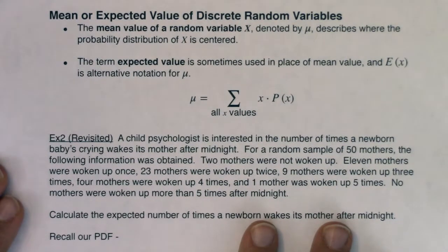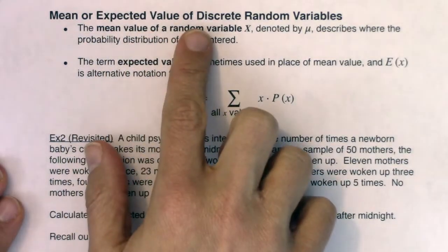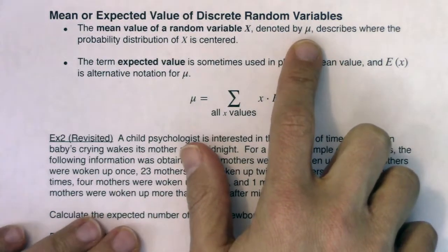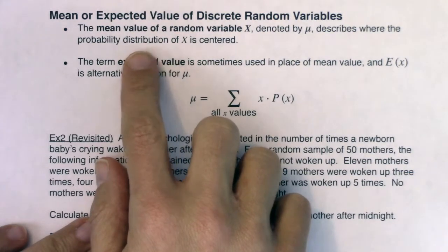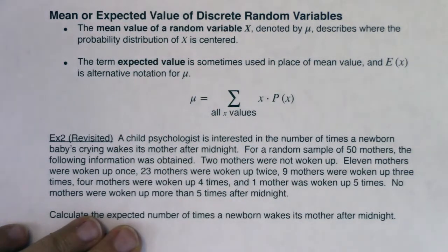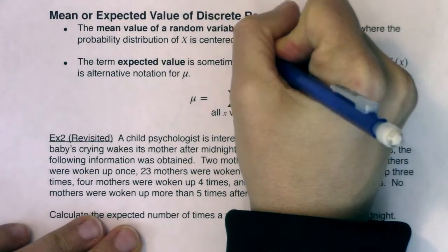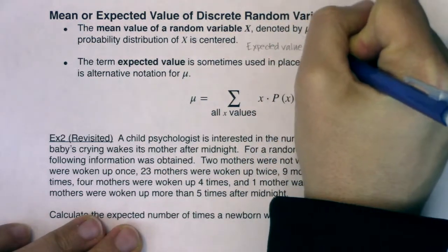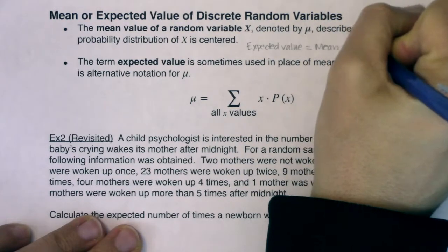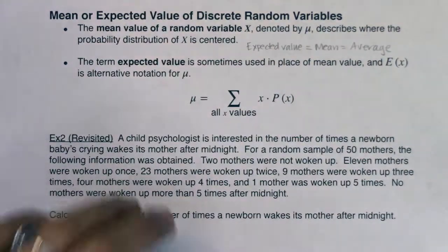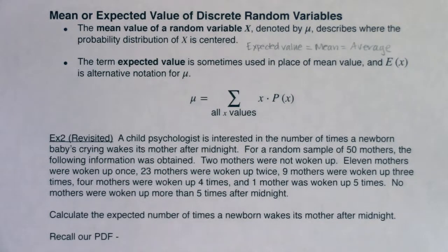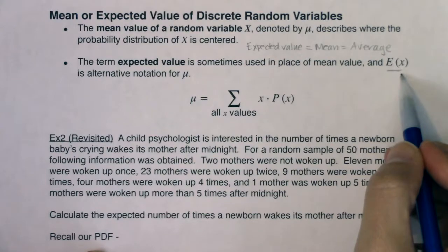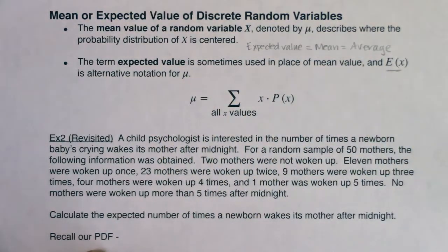When you hear me talk about mean or expected value, the mean of a random variable is denoted by mu, the population mean. It describes where the probability distribution is centered. The term expected value is another word for mean, which is still another word for average. Expected value has its own symbol, E(x), which is the same as mu.